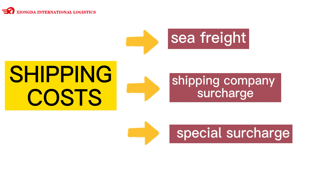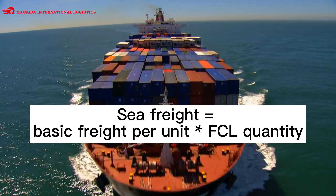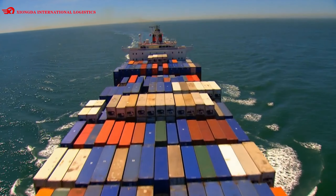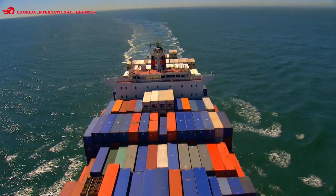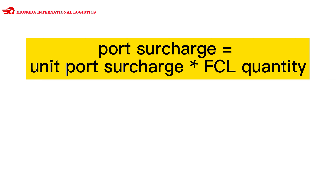1. Sea freight: sea freight equals basic freight per unit multiplied by FCL quantity. 2. Additional fees, such as port surcharge, equals unit port surcharge multiplied by FCL quantity.